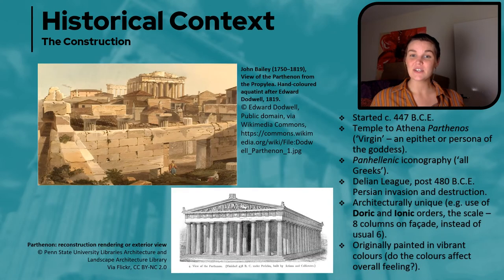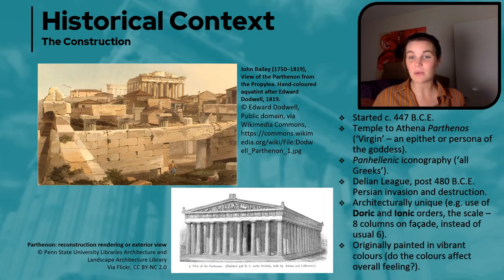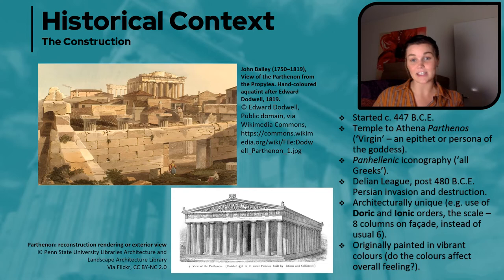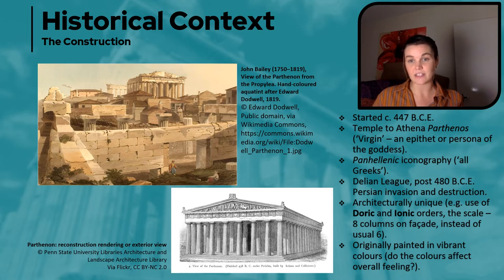The Parthenon has a very different history in comparison to the Ġgantija Temple that we looked at in our first case study, but in a similar approach I want to discuss its construction and the historical context behind that. I think it's very important to understand the foundational intentions for a building, especially when applying the three F's and discussing the idea of the palimpsest in architecture.